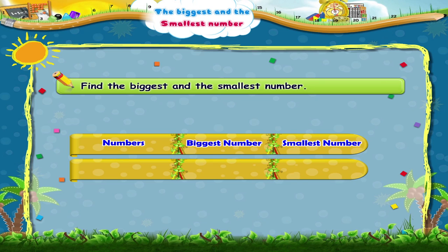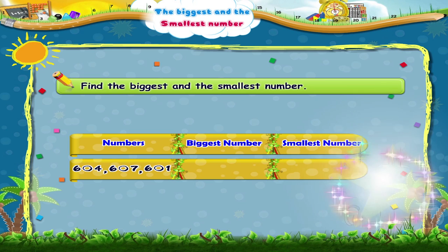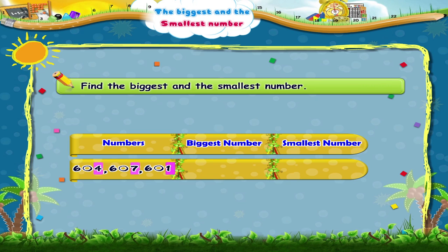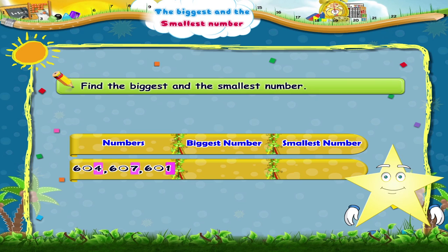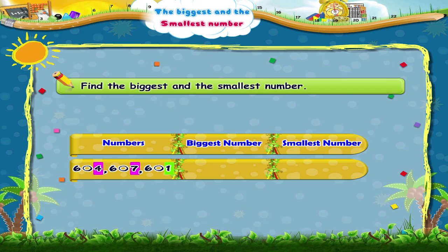Now tell me the smallest and the biggest numbers out of 604, 607 and 601. In all three numbers, 6 is in the hundreds place and 0 is in the tens place. So we look at the digit in the units place. Out of 4, 7 and 1 which are in the units place, 1 is the smallest and 7 is the biggest digit. So 607 is the biggest number and 601 is the smallest number.